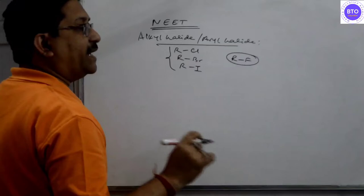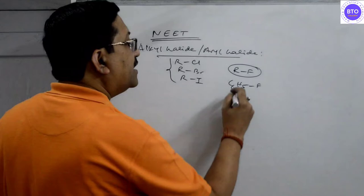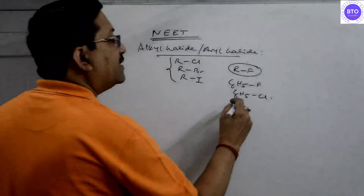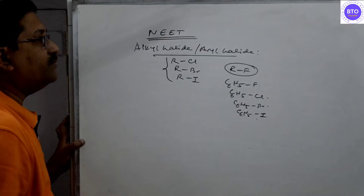Whereas if you consider C6H5, that is the aryl or phenyl group, along with halogen, that may be possible. There is C6H5Cl, that is chlorobenzene; C6H5Br, that is bromobenzene; and C6H5I, that is iodobenzene. These can be found in the open atmosphere.